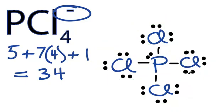The phosphorus has more than 8. It has 10 valence electrons, but that's okay because phosphorus is in period 3, or row 3 of the periodic table, and it can have more than 8 valence electrons.